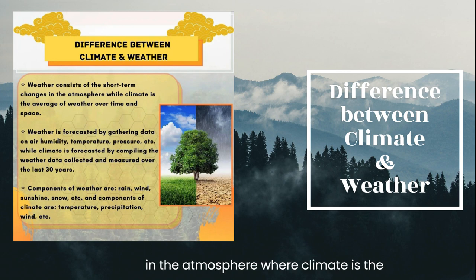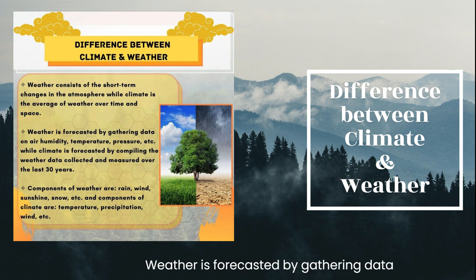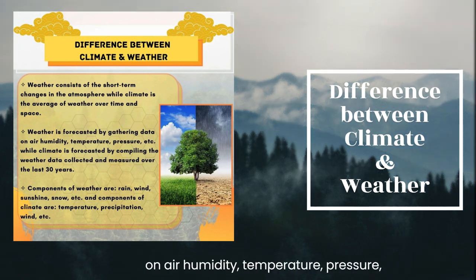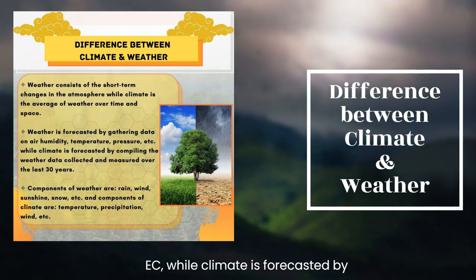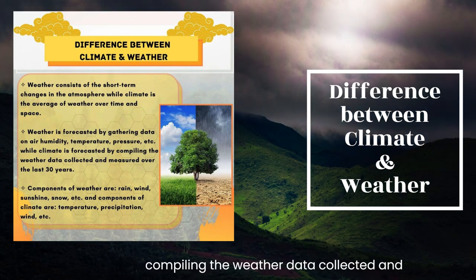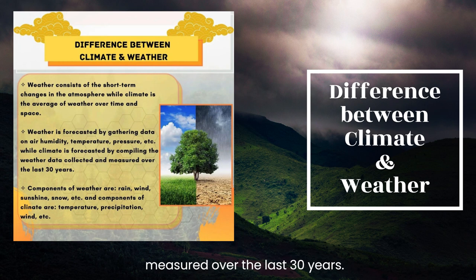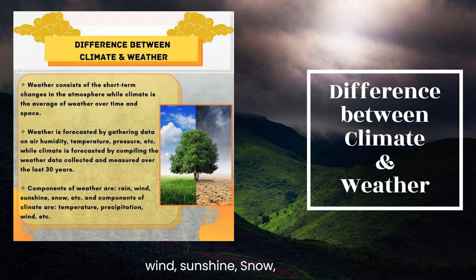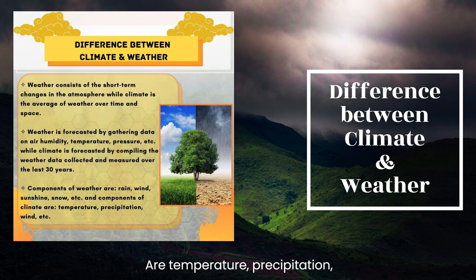Difference between climate and weather: Weather consists of short-term changes in the atmosphere, while climate is the average of weather temperature over time and space. Weather is forecasted by gathering data on air humidity, temperature, pressure, etc., while climate is forecasted by compiling weather data collected and measured over the last 30 years. Components of weather are rain, wind, sunshine, snow, etc., and components of climate are temperature, precipitation, wind, etc.